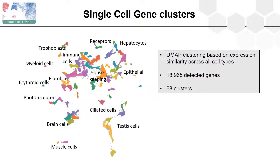A new feature for version 21 is that we have also performed UMAP clustering based on expression similarity across all cell types. Based on this analysis we identified 68 gene clusters that were manually annotated to describe the main common features in terms of function, location, and specificity. We were able to identify distinct gene clusters related to certain cell types or organs — such as fibroblasts and epithelial cells — as well as gene clusters with a specific function, such as receptors and housekeeping genes. Each cluster contains both well-known and unknown genes, making these lists really interesting to explore further.